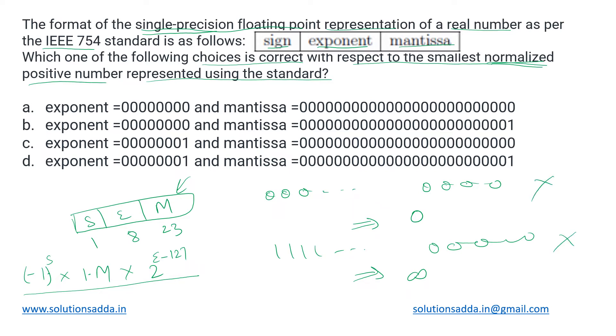How will we represent the smallest positive number? Let us check the options. Exponent is all zeros, mantissa is all zeros, so we just discarded it being zero. Next is exponent is all zeros, mantissa is one at the rightmost end.